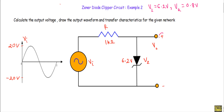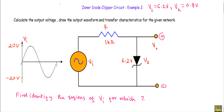We will take the output across this terminal to this terminal, considering the first terminal is at higher potential. To solve this kind of circuit, we will first identify the regions of applied voltage Vi for which the zener diode operates in: forward bias, non-conducting or off state, and zener breakdown region.